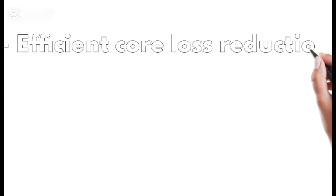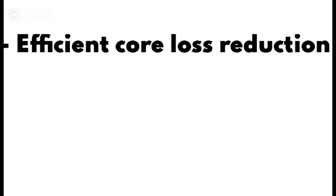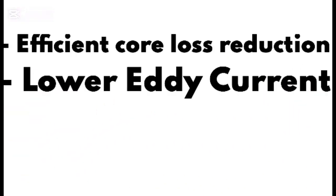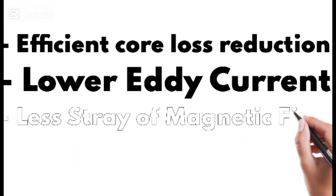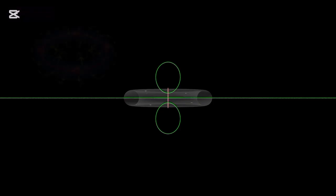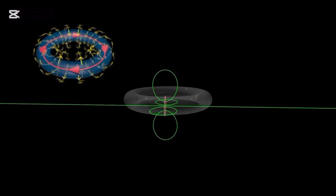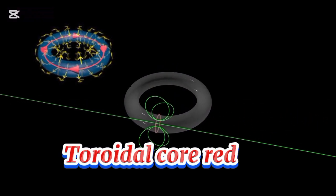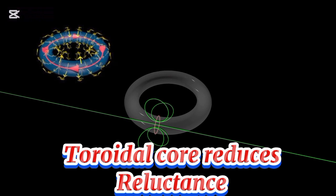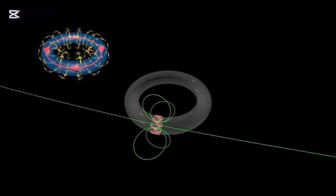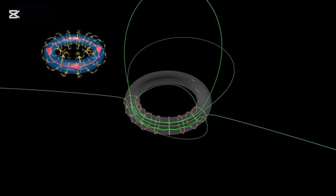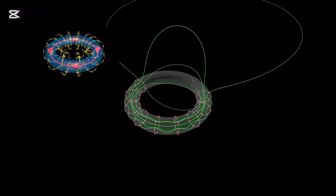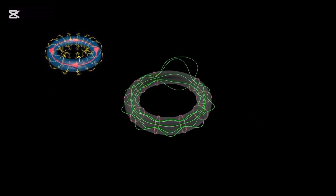Toroidal transformers are also more efficient at reducing core losses. Lower eddy currents due to continuous magnetic flow, less stray magnetic fields, so nearby electronics stay safe. That solid ring of metal allows a continuous, unbroken path for magnetic flux reducing reluctance, the magnetic equivalent of resistance, and improving energy transfer. The result? Less hum, more clarity, and a compact build ideal for modern systems.